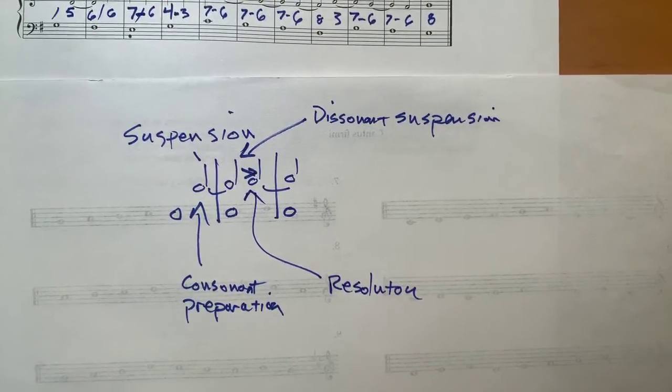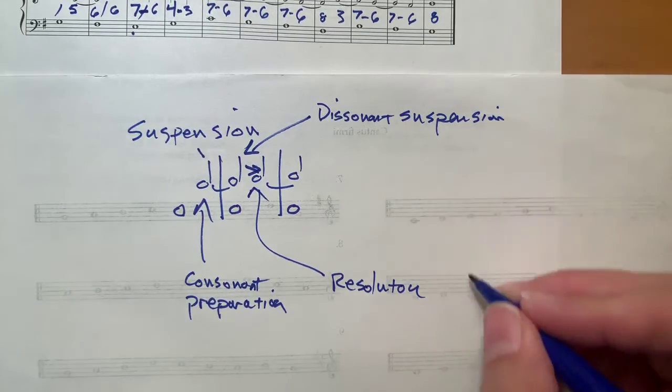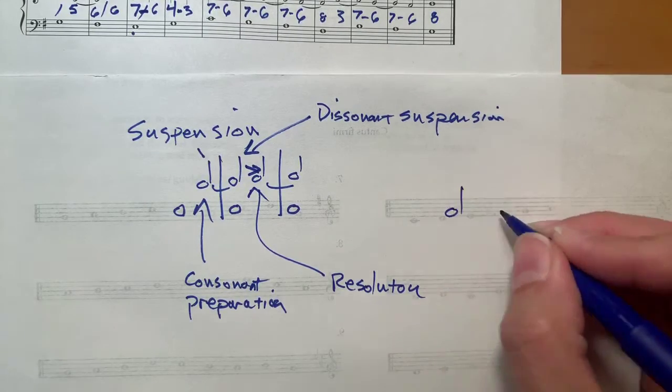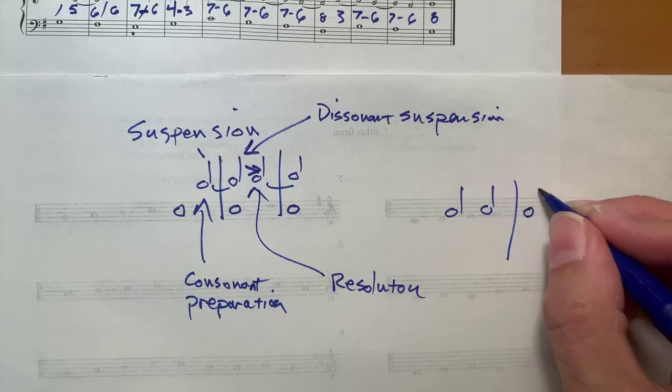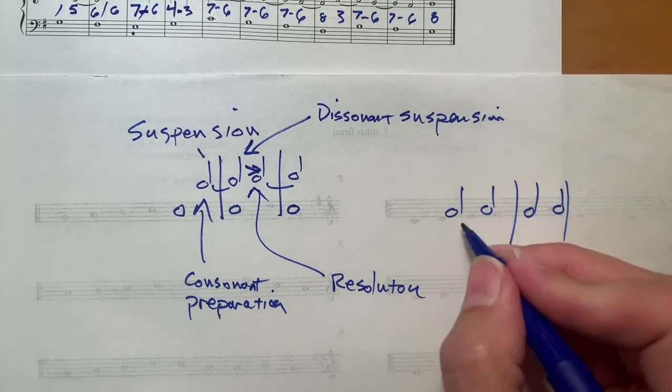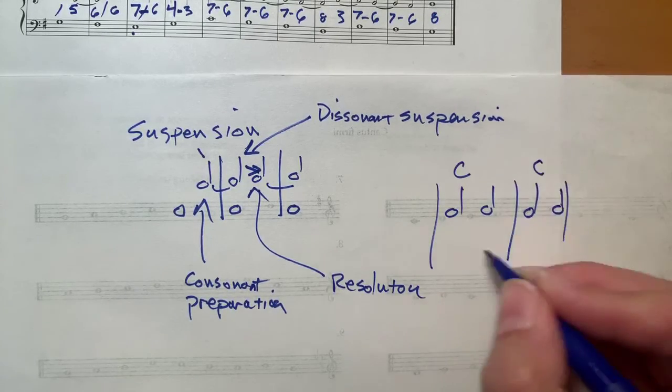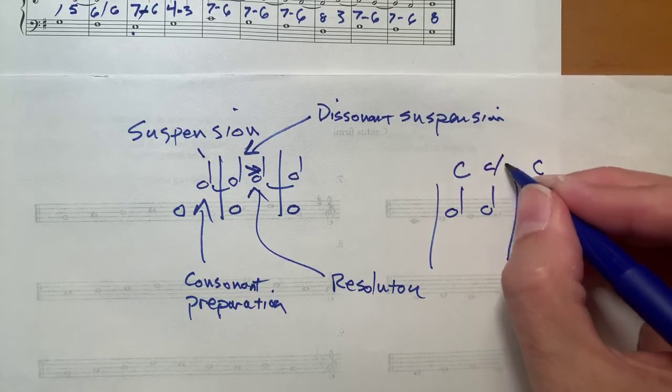Okay, so just to recap this, and I want to compare this to second species. Do you remember in second species, we had a series of half notes? Like so. And the downbeat was required to be consonant, and the weak beat could be consonant or dissonant.